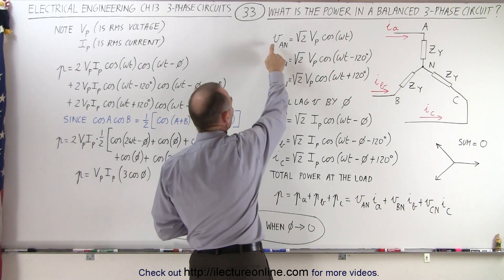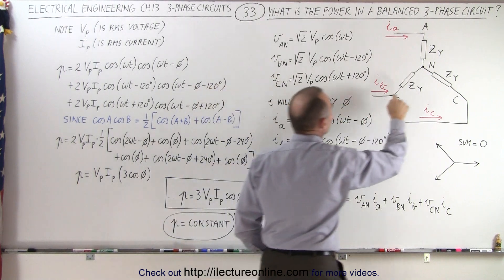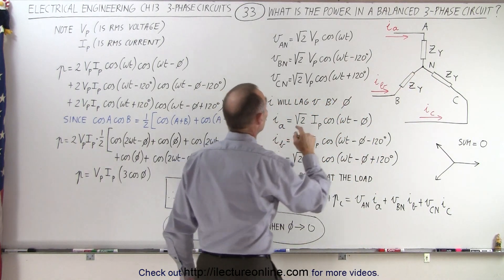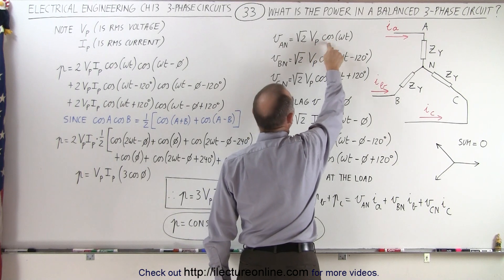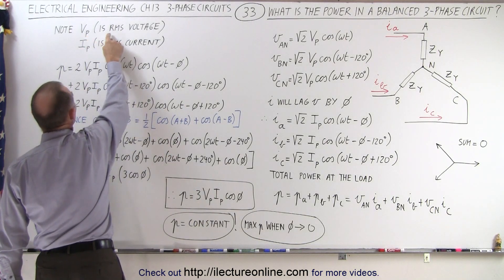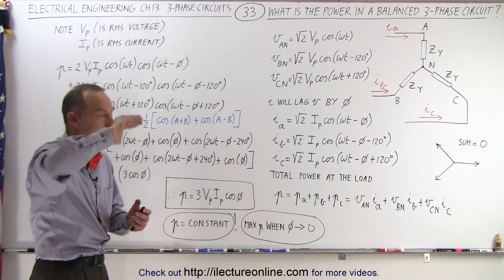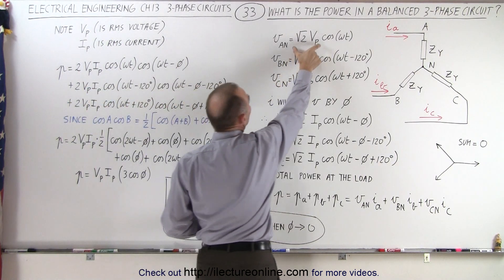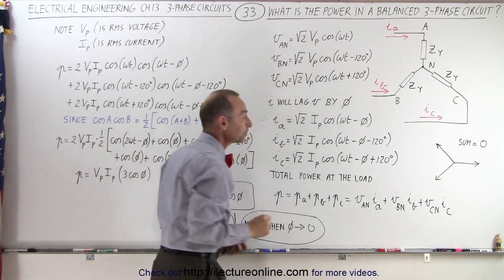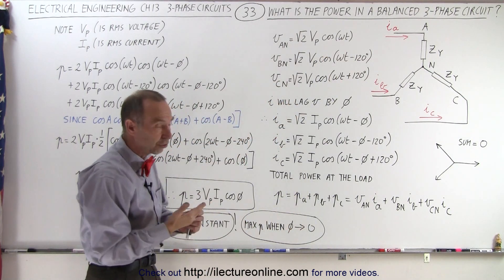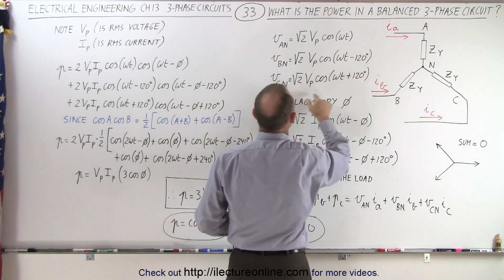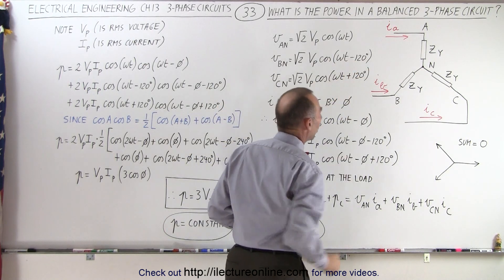We're going to write the three voltages — Van, Vbn, and Vcn — which are the voltages across the three impedances. We define Van as the square root of two times the phase voltage times the cosine of omega t. The phase voltage is the RMS voltage, so to get the time-varying peak voltage, we multiply the RMS voltage by the square root of two. Vbn will be the same but with a phase angle of minus 120 degrees, and Vcn will be the same but with a phase angle of plus 120 degrees.